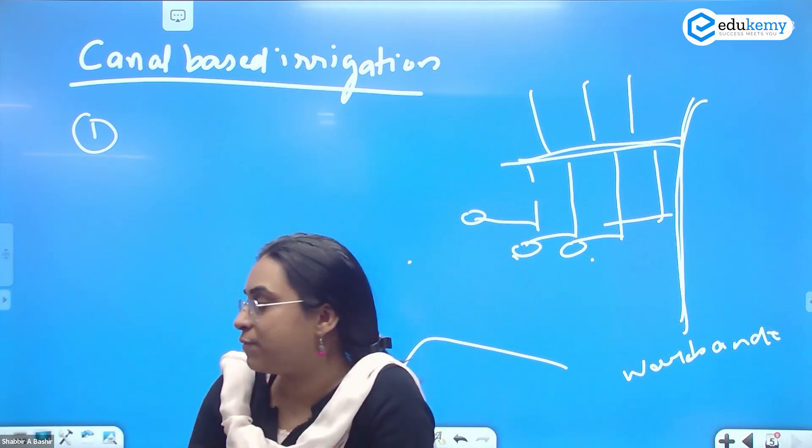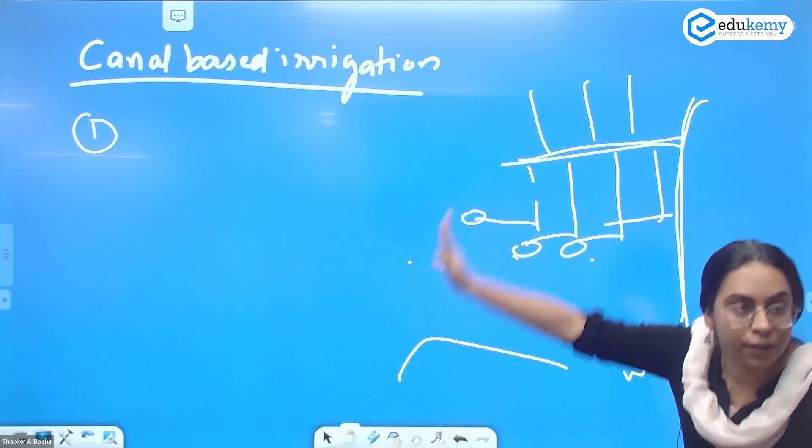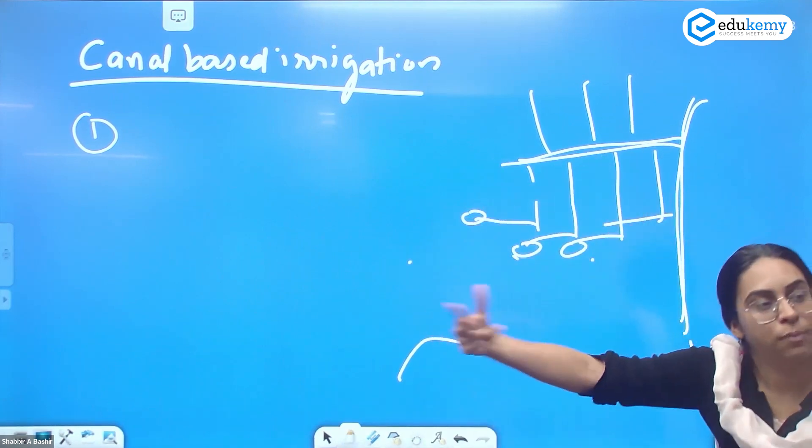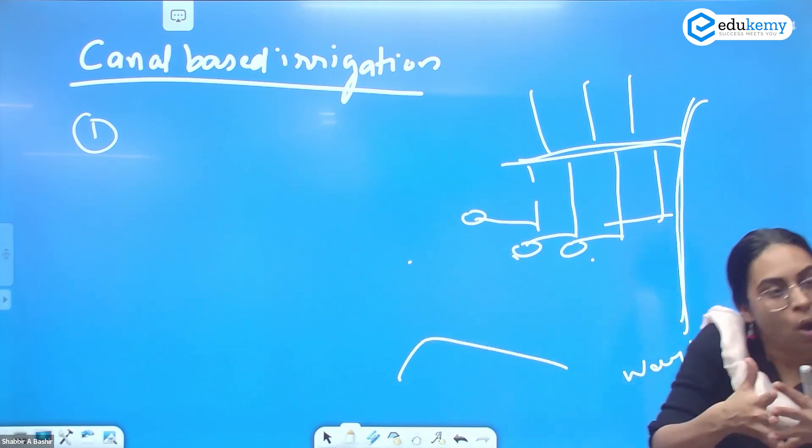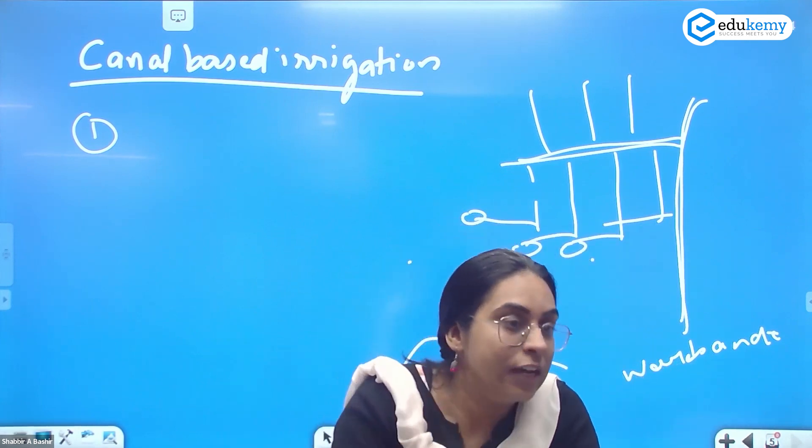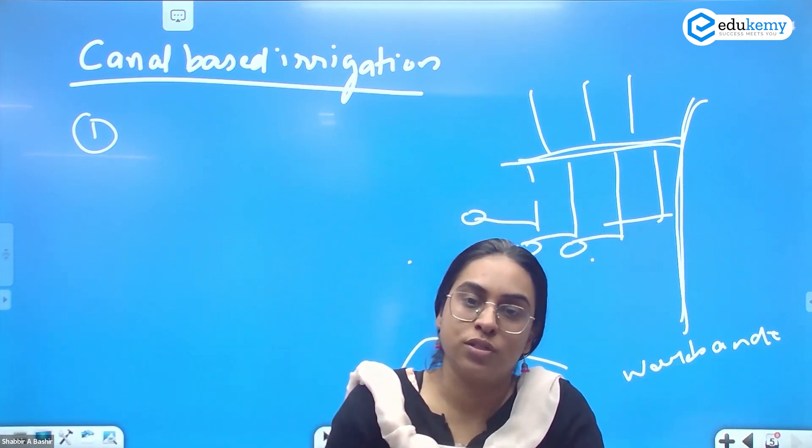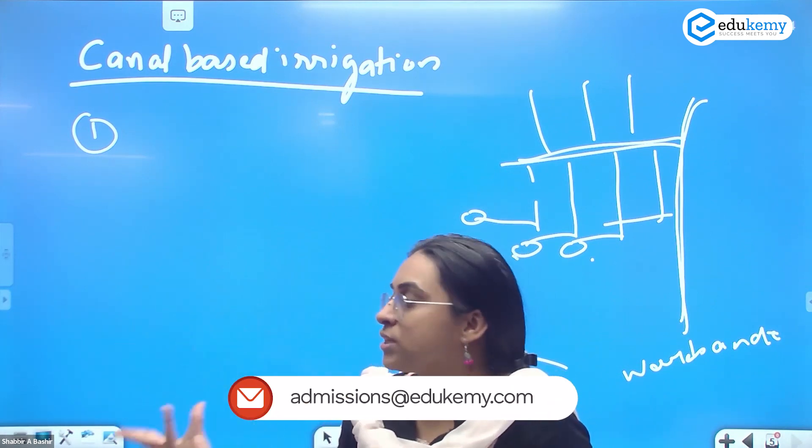The initial cost is very high. But if I take into consideration the entire life of the canal, the cost reduces as the year span is too much. Initial cost is very high, but long term, canal is very effective. But centralized, so not as convenient. Whereas well and tube well is the most convenient one and therefore most exploited also.